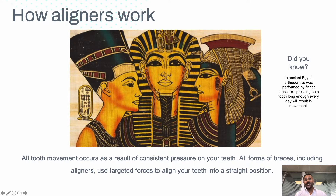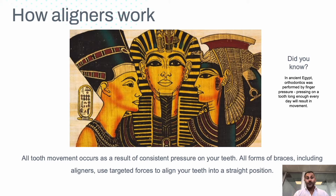First of all, let's learn how aligners work. Teeth straightening is not new — in ancient Egypt, orthodontics were performed by finger pressure, so if you press on a tooth long enough it will move. All tooth movement occurs as a result of consistent pressure on the teeth. It's physics and biology. All forms of braces, whether fixed in front of your teeth, behind your teeth, or removable, use targeted forces to align your teeth.